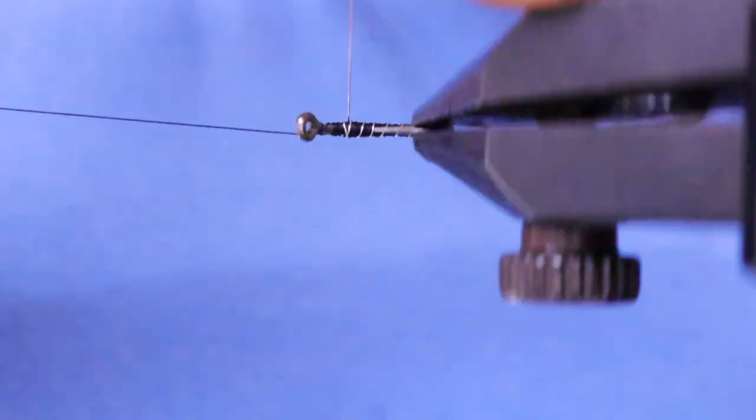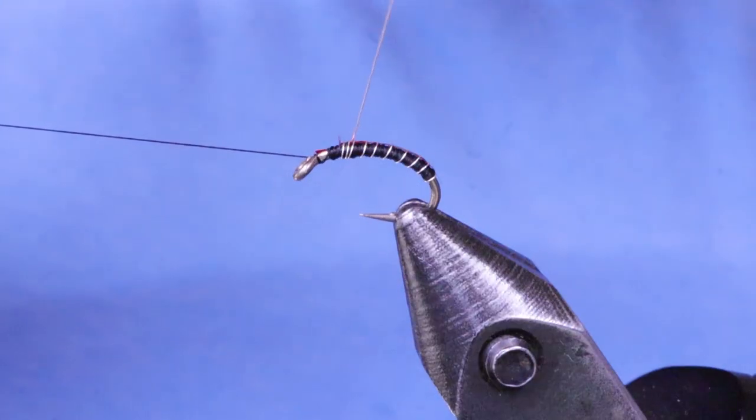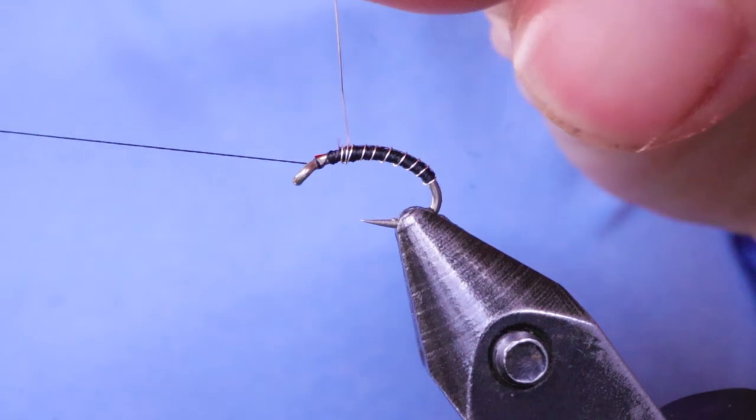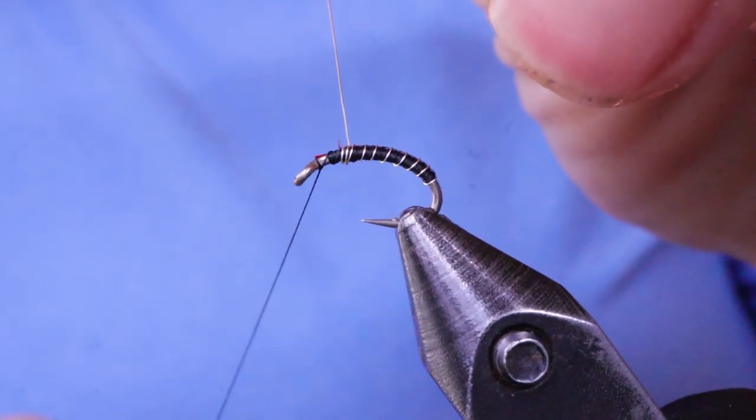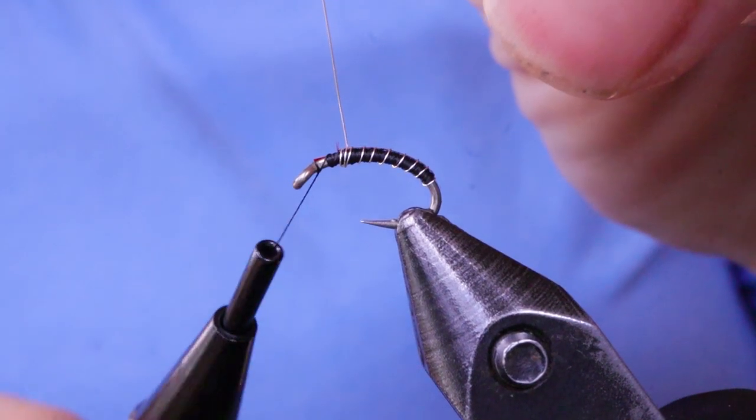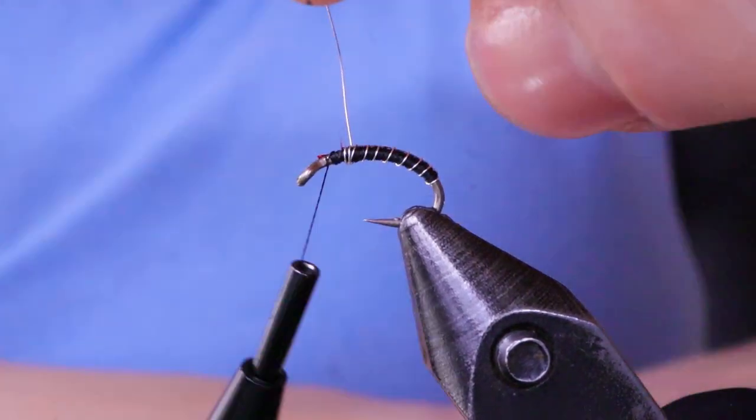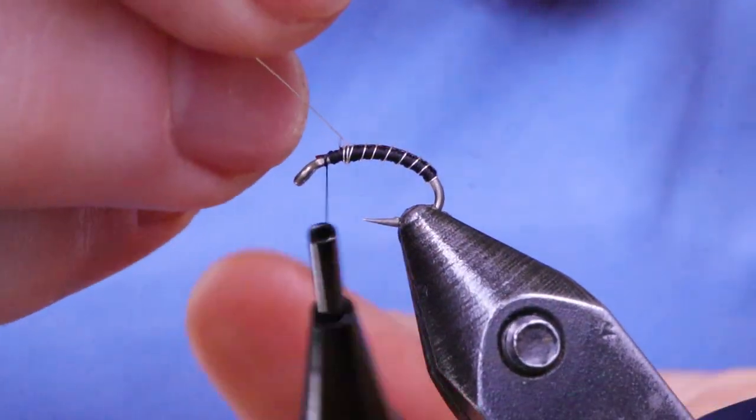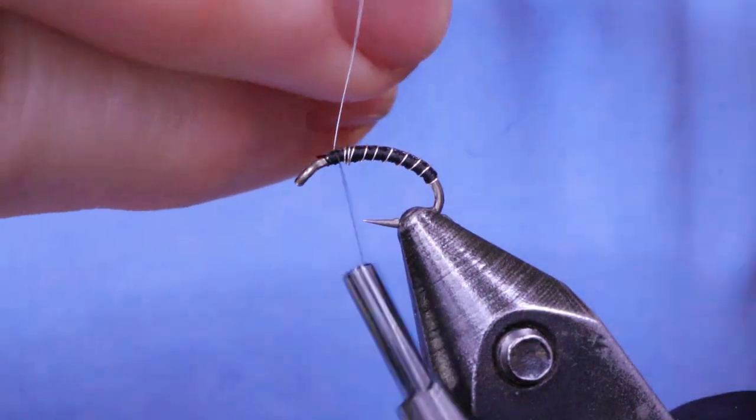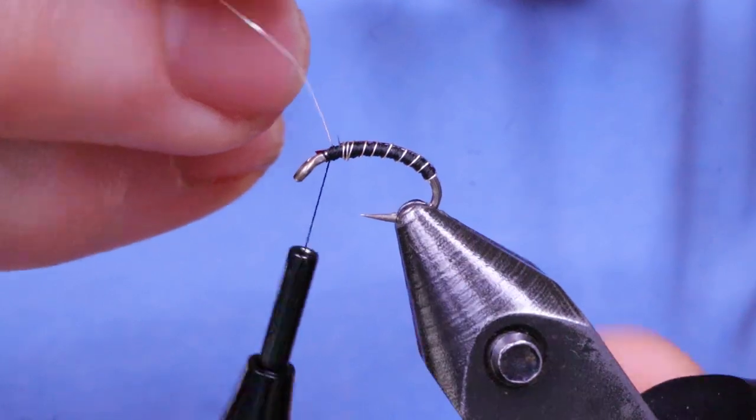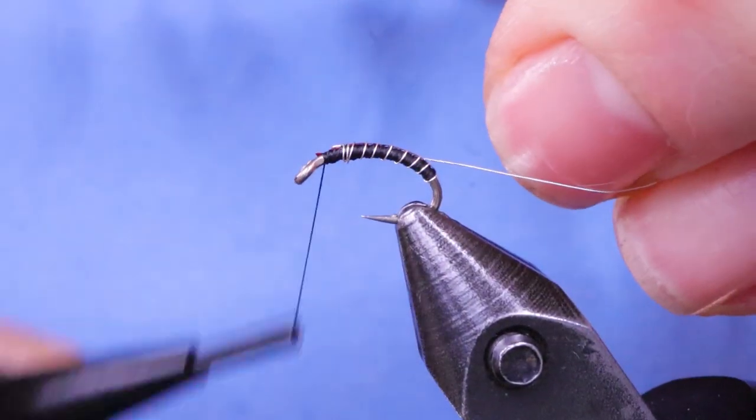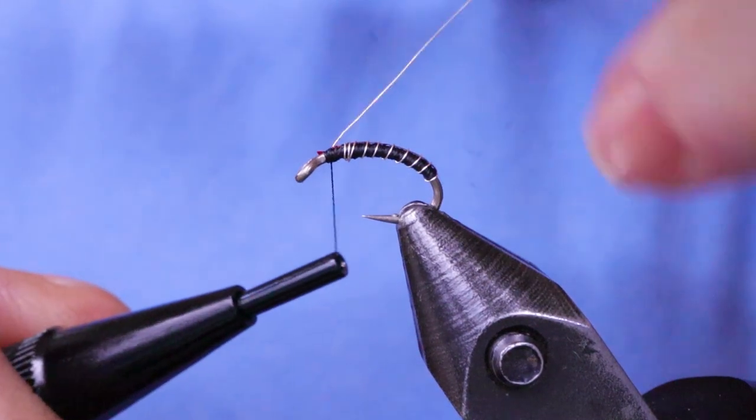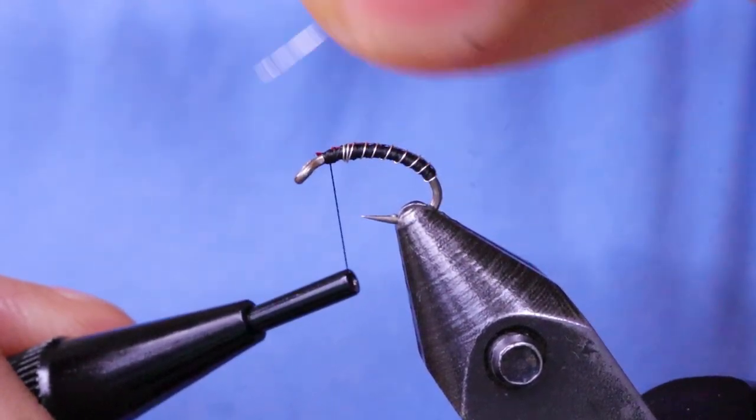And once it's up at the front I'm just going to do a couple more wraps over at the front, just for a little bit of weight. And then just tie the wire off and break that away.